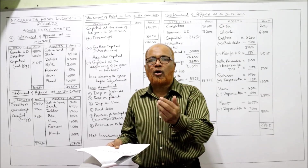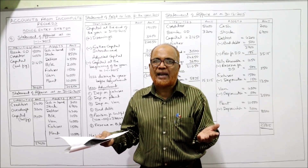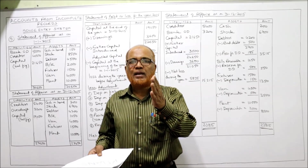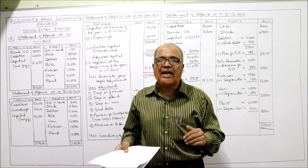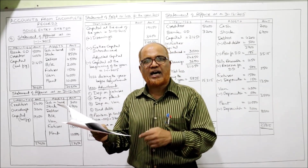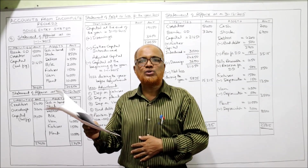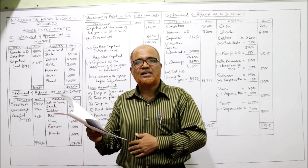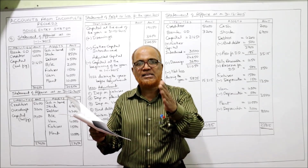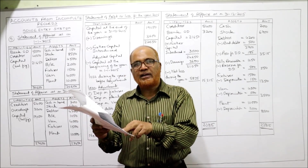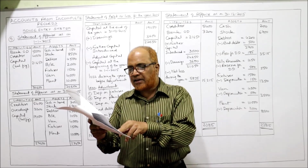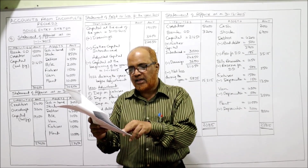If double entry system is not followed, it is called single entry, where accounts are incomplete. It is a defective system. Only petty small business houses maintain single entry — they keep a cash book and personal accounts but not real or nominal accounts. That is why no trading profit and loss account or balance sheet can be prepared under single entry system.